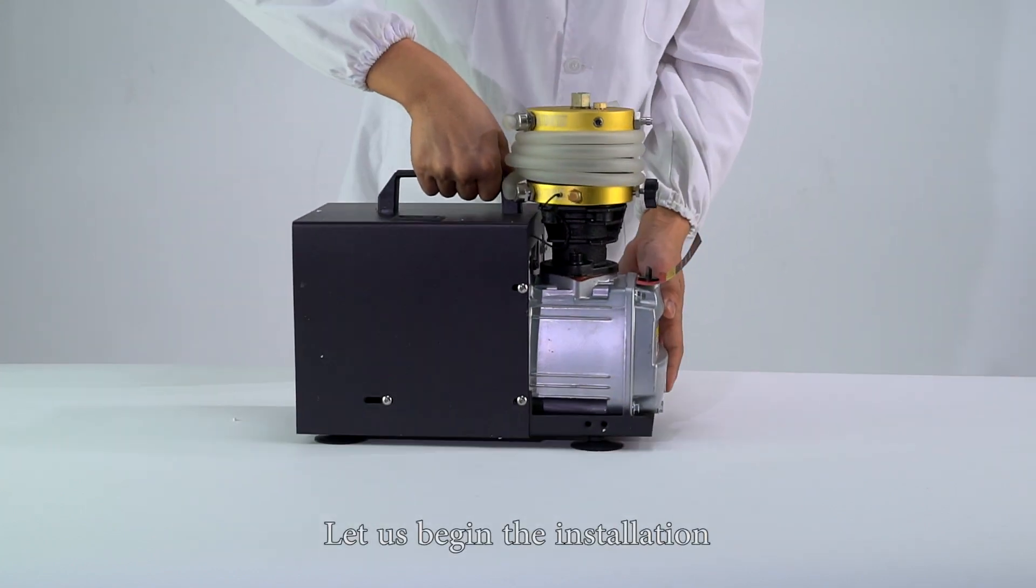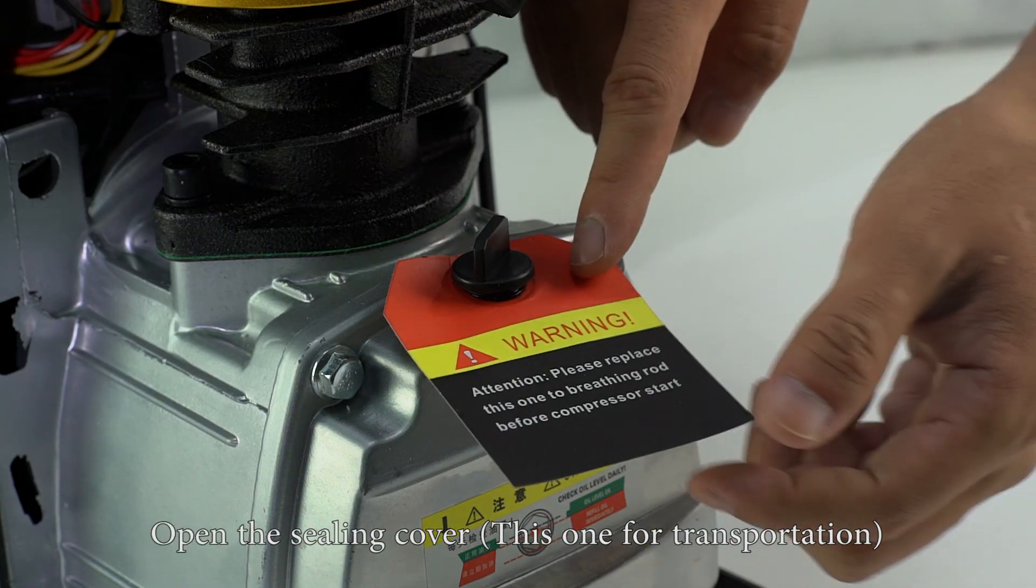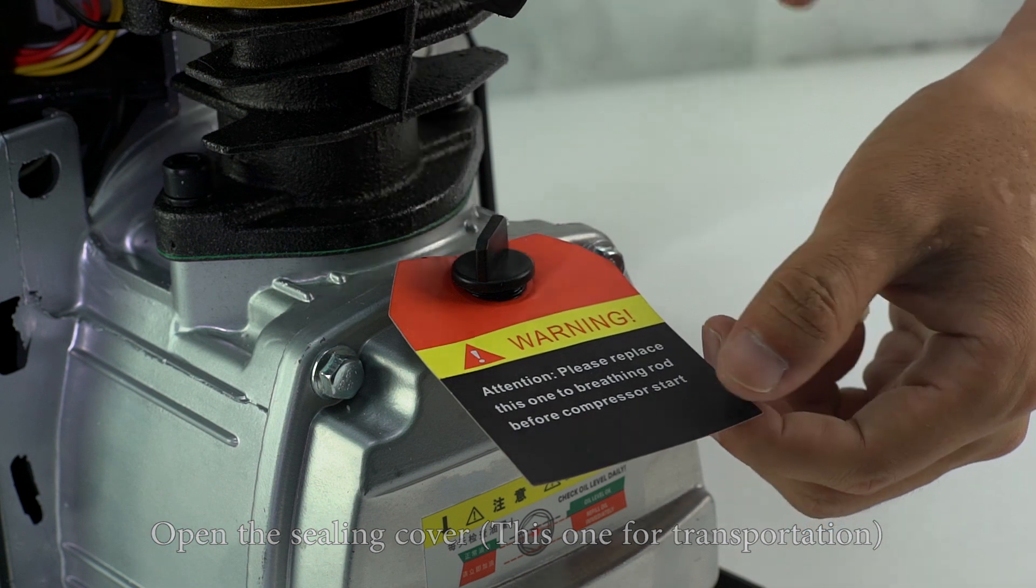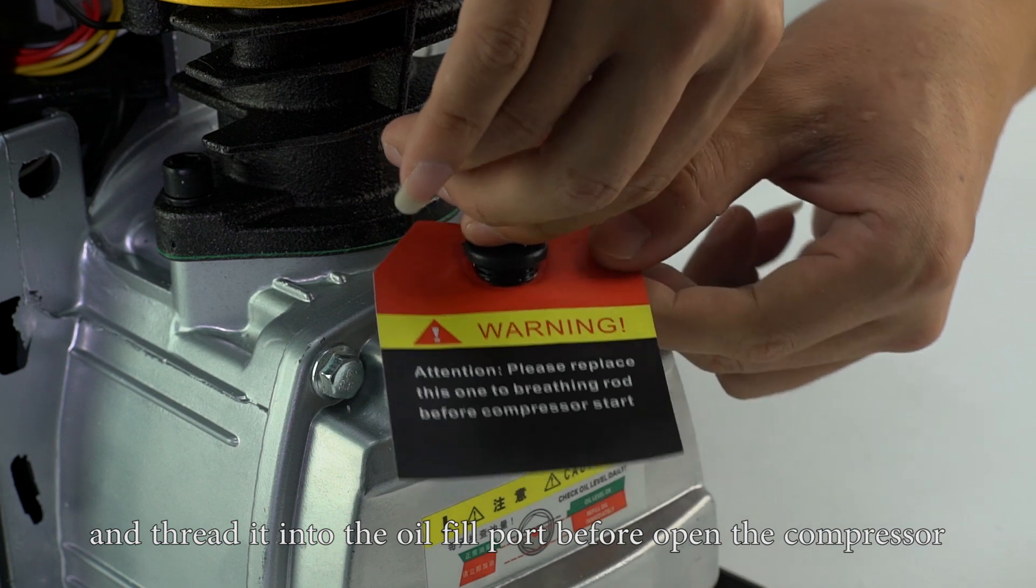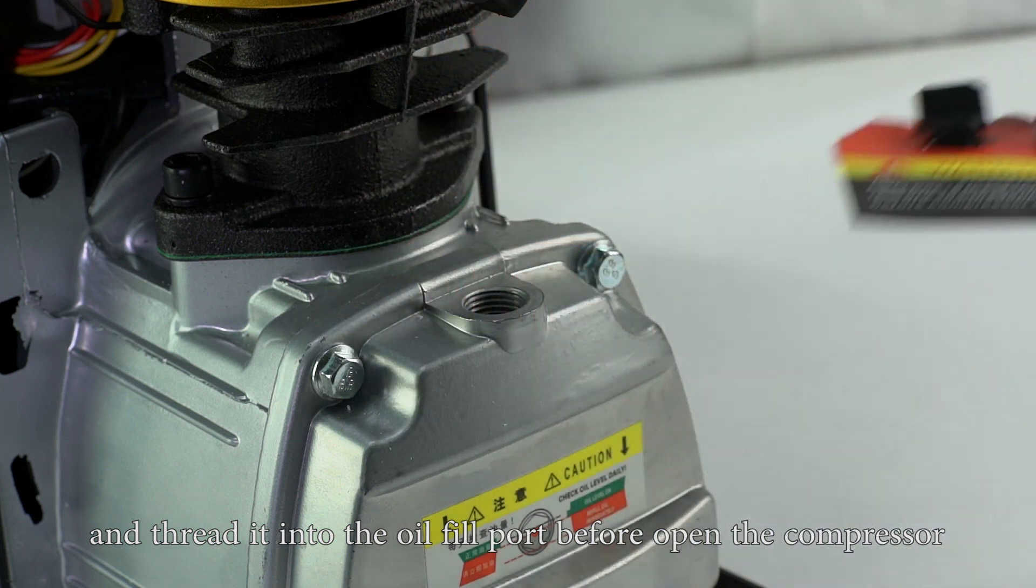Let us begin the installation. Open the cylinder covers, this one for transportation. Locate the crankcase breather in the accessory pack and thread it into the oil fill port before opening the compressor.